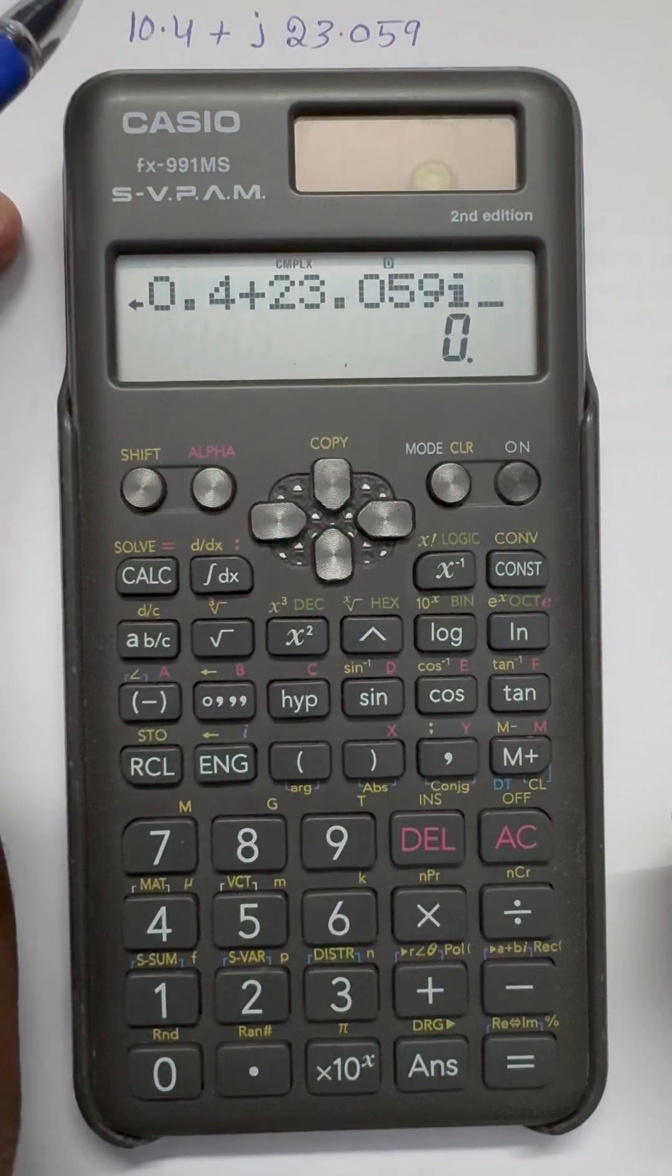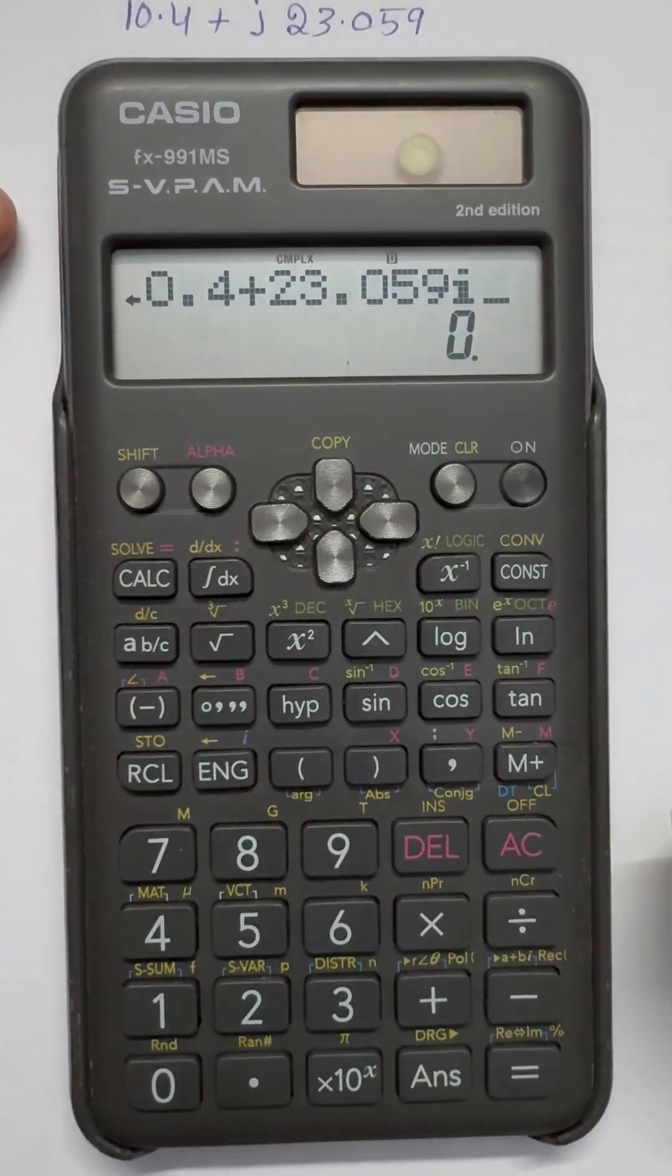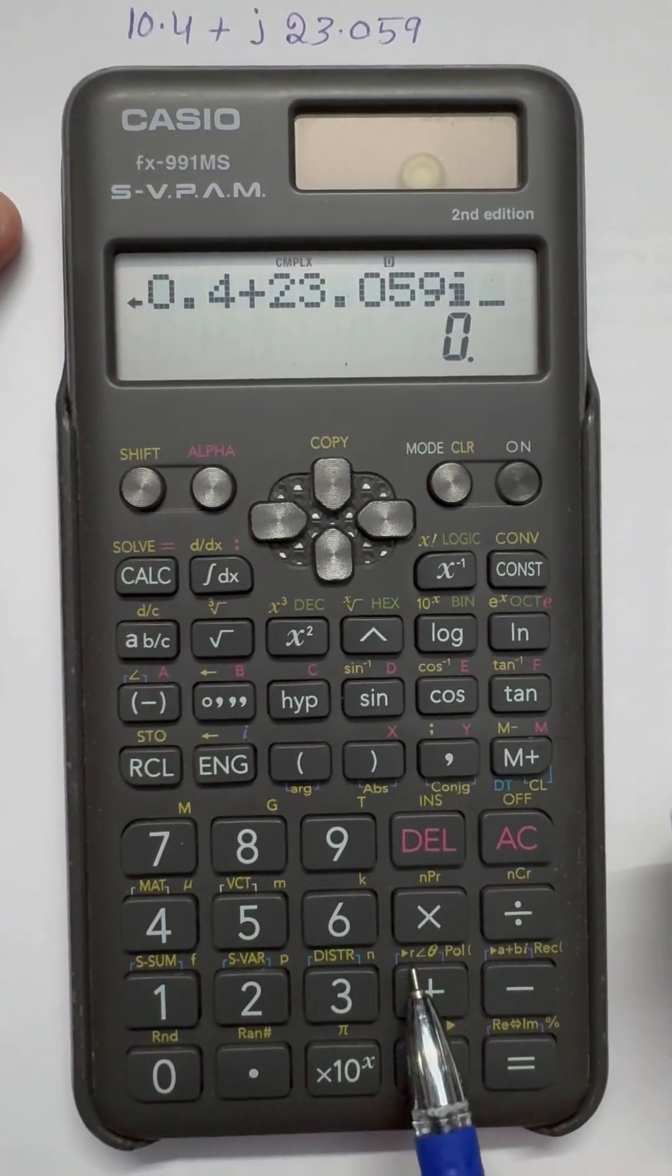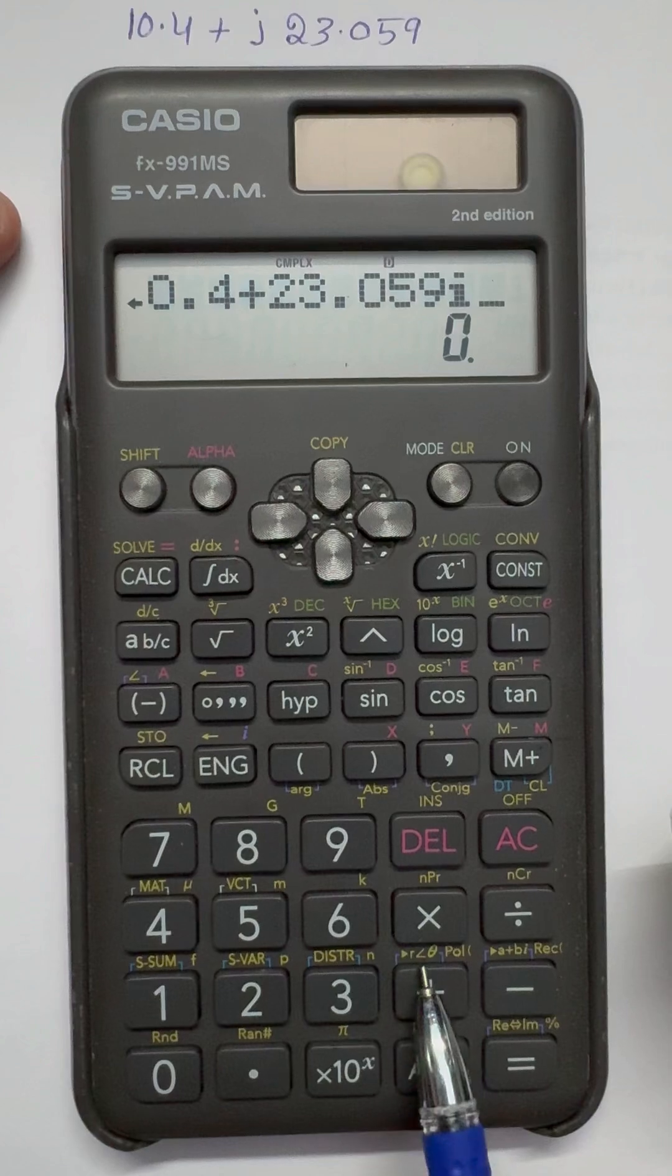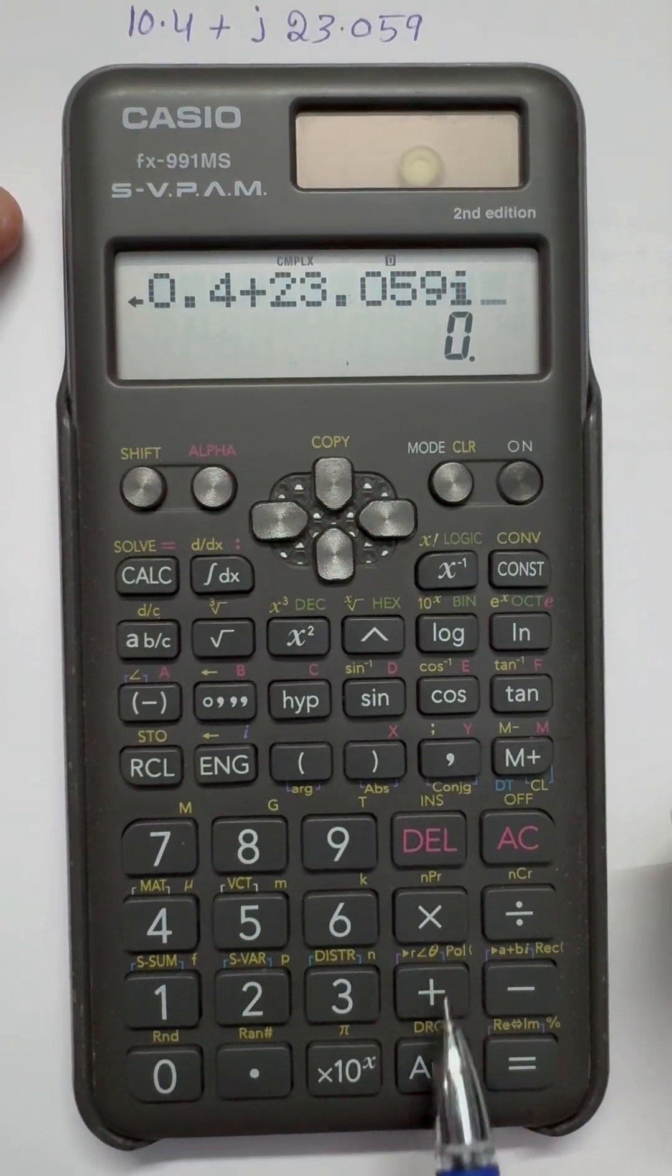Now I have to convert this one into polar form. So when we see here, look at here, r at an angle of θ. That is polar form.